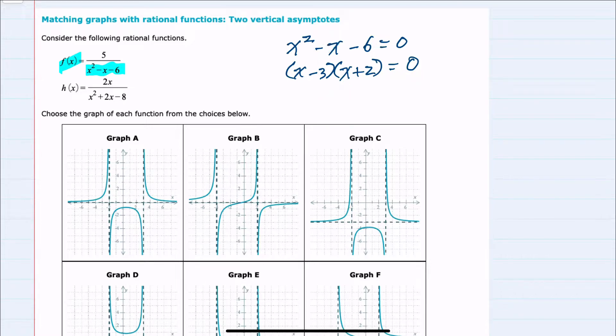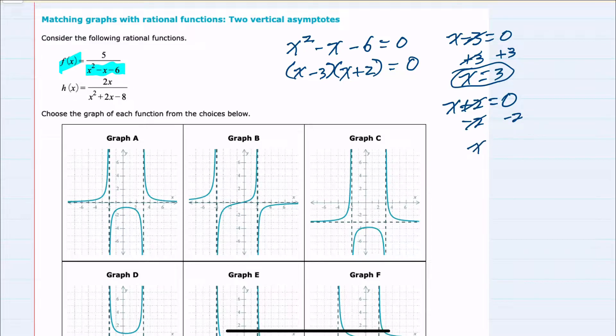So having factored, I can now set each of these factors equal to zero. x minus three equals zero. Solving for x, we have x equals three. That's one of our asymptotes. The other factor, x plus two, when we set that equal to zero, I can get the x by itself and have x equals negative two. So we have two asymptotes here, one at x equals negative two and one at x equals three.